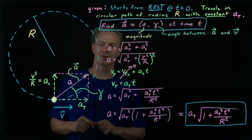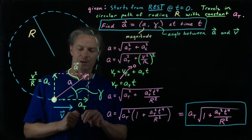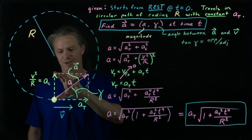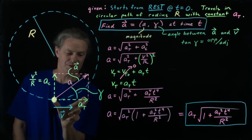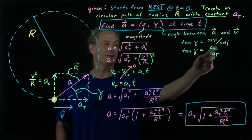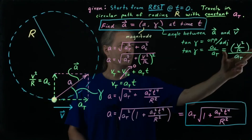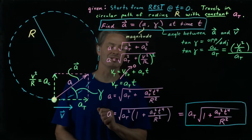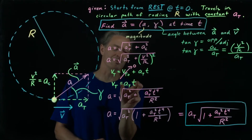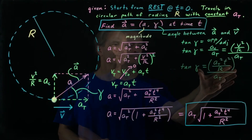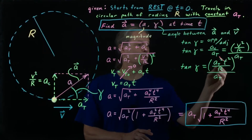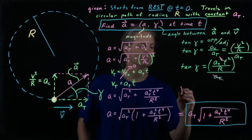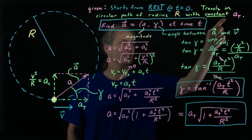Moving on to find the direction of the acceleration at time t as indicated by angle gamma: the tangent of gamma equals opposite over adjacent, which is a sub c over a sub t, and a sub c is v squared over R. Noting that the speed at time t equals a sub t times t, we can substitute that in. Dividing top and bottom by a sub t, we simplify. Taking the arc tangent of both sides, we can solve for gamma, and we now have our angle gamma as a function of our given parameters and time.